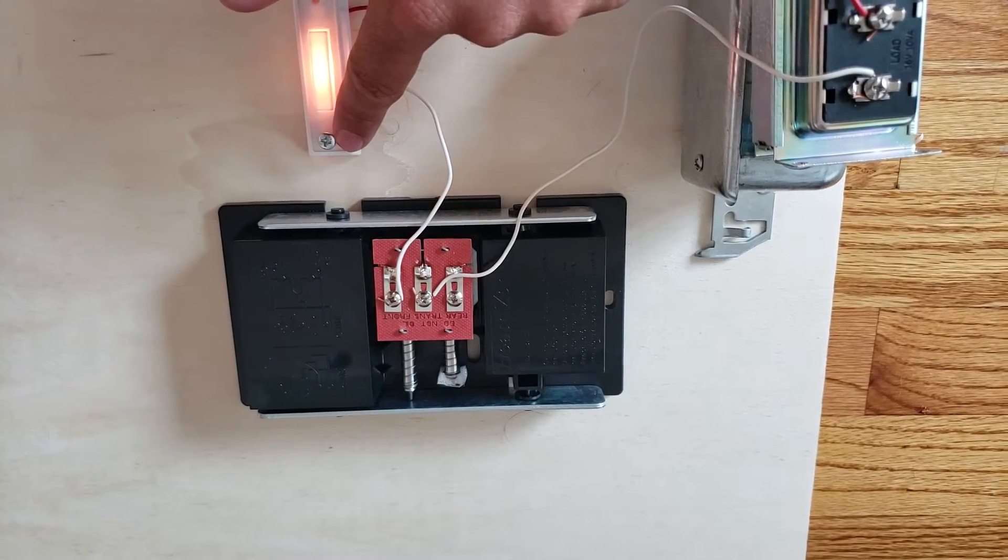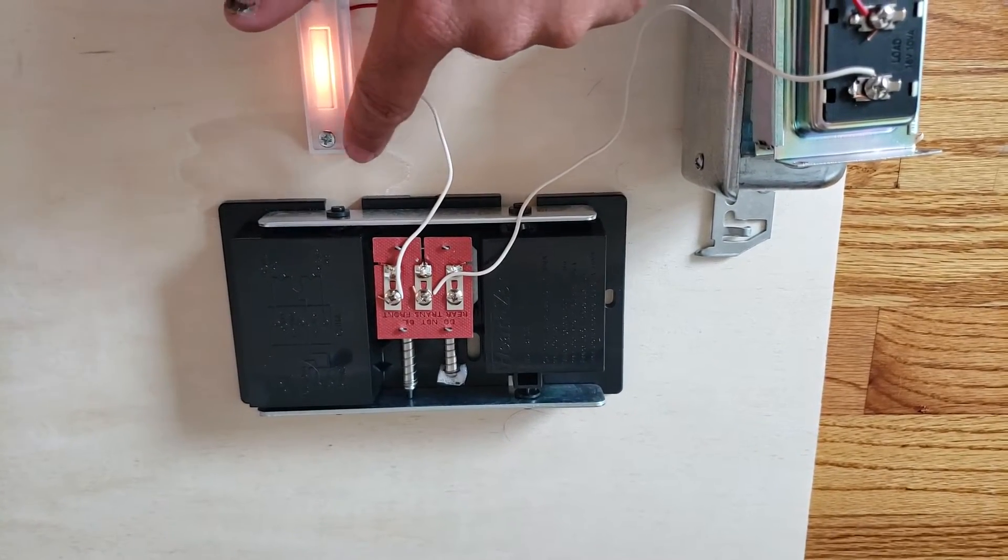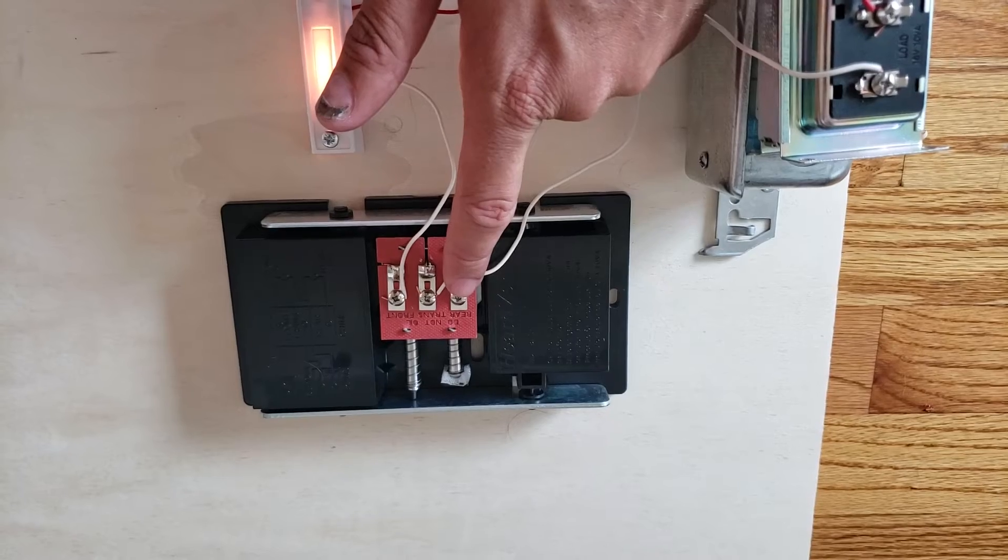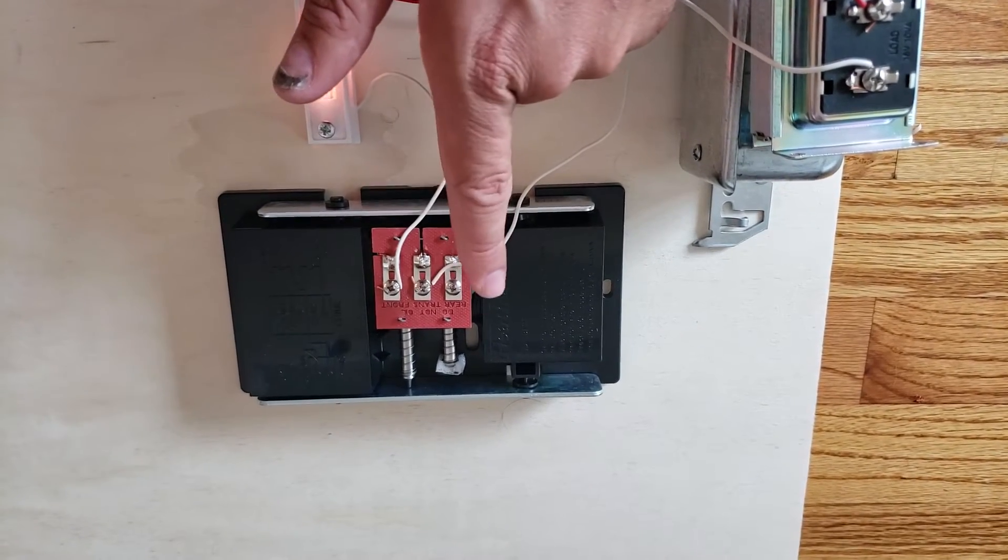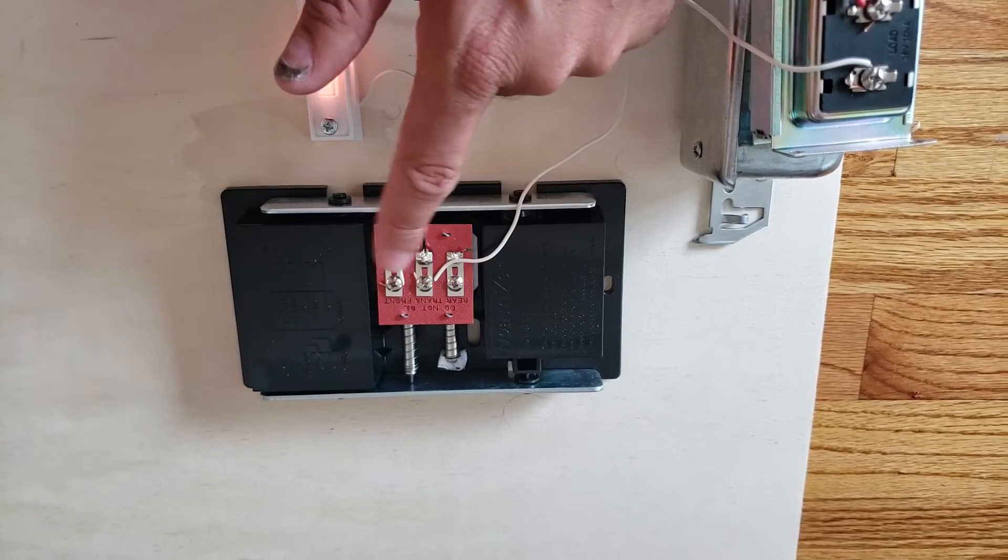Why it has a rear doorbell is for those of you that want to wire in two doorbells. If you want a front and rear doorbell or front and side doorbell, you would just wire another wire there.